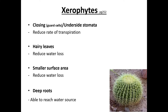Moving on, we are going to go to adaptive features. The most important things to know are xerophytes and hydrophytes. Adaptive features are basically an inherited feature that helps an organism to survive and reproduce in its environment. Xerophytes have closing guard cells and underside stomata, which help to reduce the rate of transpiration — transpiration means the loss of water.